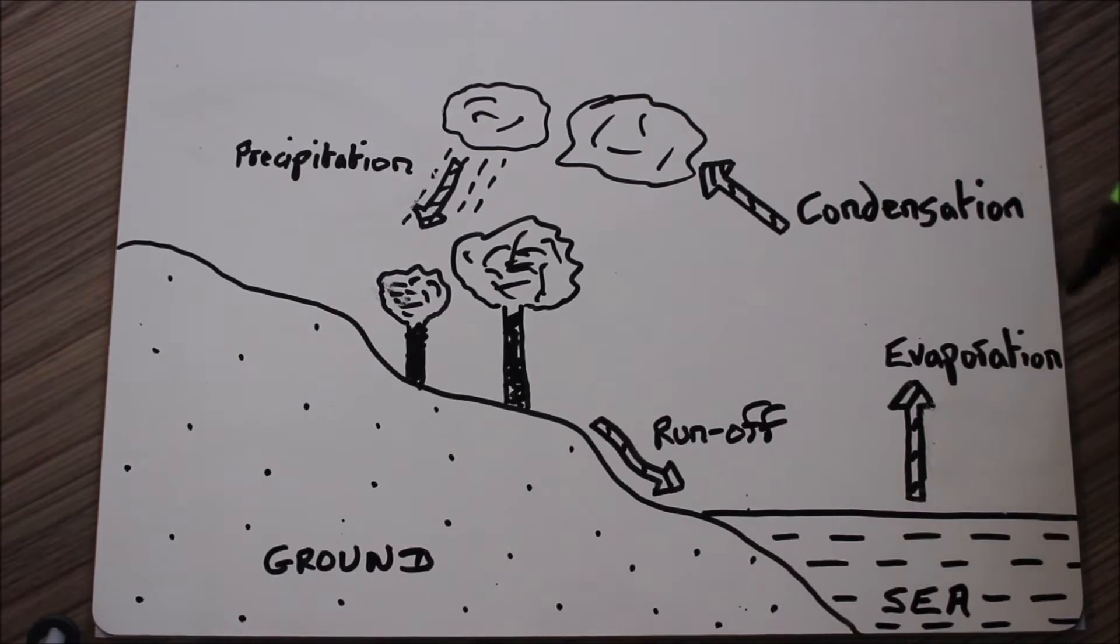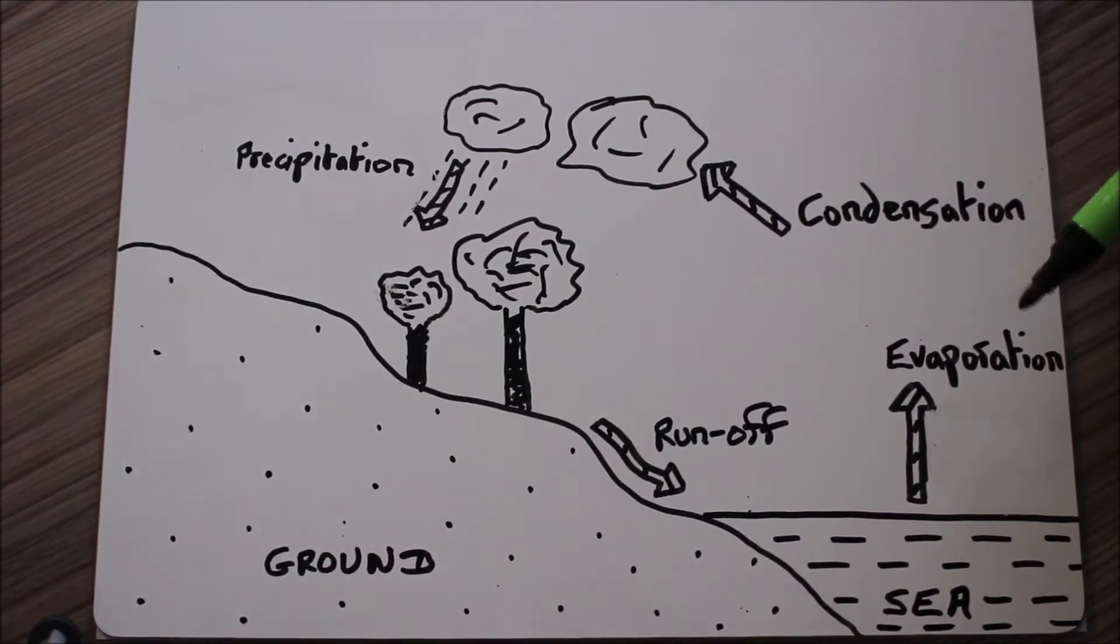The first process we'll talk about is evaporation. This is where water drops turn into being water in the air or water vapor. This occurs when you heat up water. So in a kettle, when the kettle boils you can see the steam coming out of it and the steam is the water turning into being water in the air.